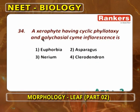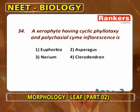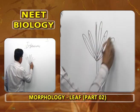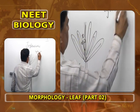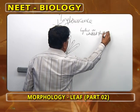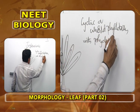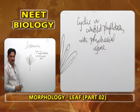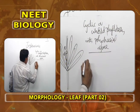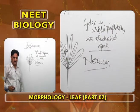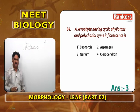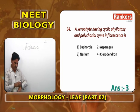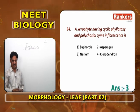An exidophyte with cyclic phyllotaxy and polycasial cyme inflorescence is Nerium. Cyclic or whorled phyllotaxy means at each node more than two leaves are present, and from the axils a flower or inflorescence is formed. Polycasial cyme means peduncle grows definitely ending as a flower, and from the lower side more than two lateral branches develop. Euphorbia is cyathium; Asparagus (Liliaceae) has simple raceme; Clerodendron has dichasial cyme.